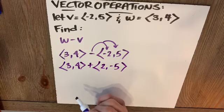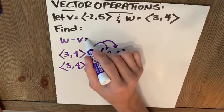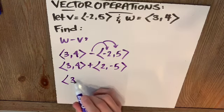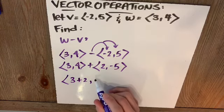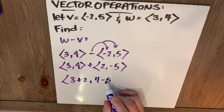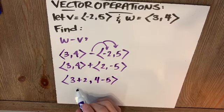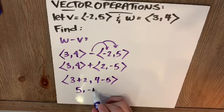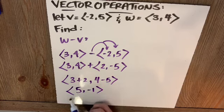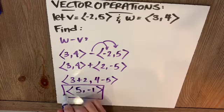So my resultant vector W minus V is going to be 3 plus 2, 4 minus 5 or plus a negative 5 to give us 5, negative 1. That is my resultant vector.